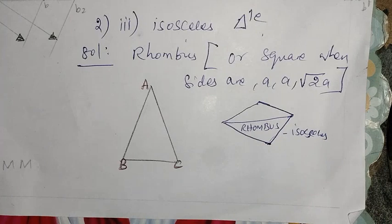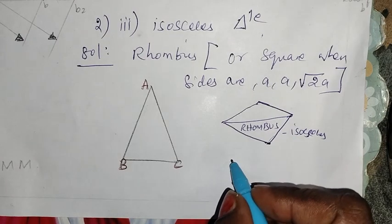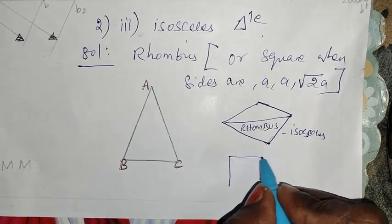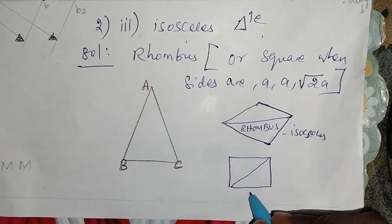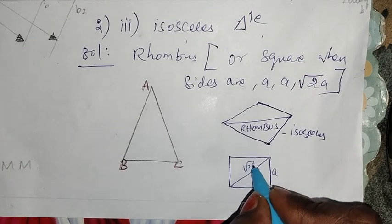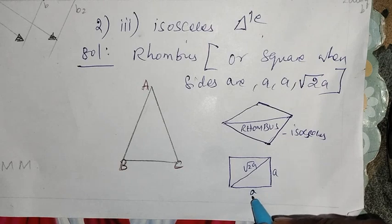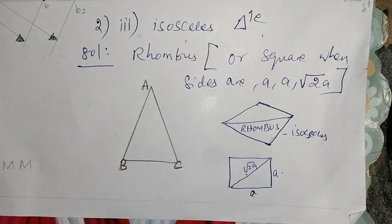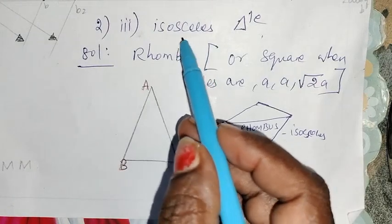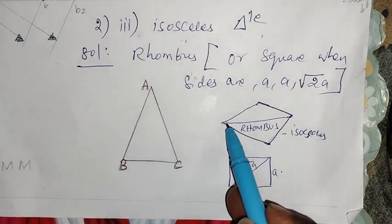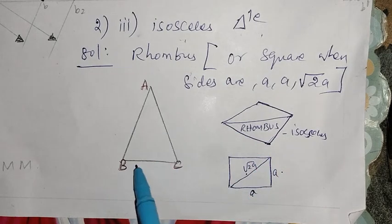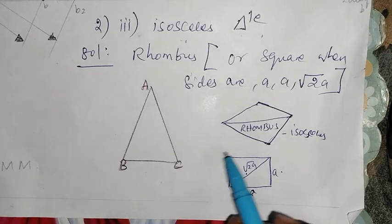When the sides are a, a, and root 2a, this is a square. Square is an isosceles triangle — this side is a, this side is a, and this is root 2a. So an isosceles triangle with sides a, a, root 2a forms a rhombus or square. The two sides of the isosceles triangle are equal.